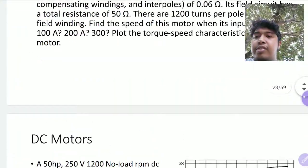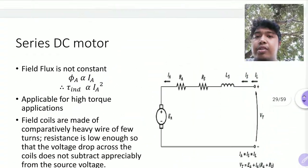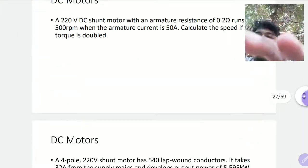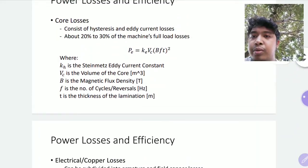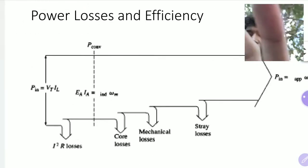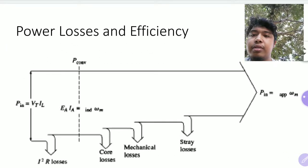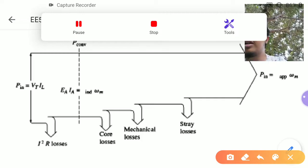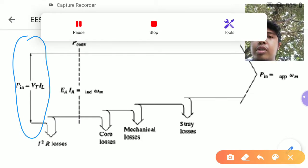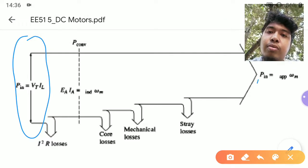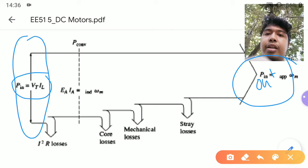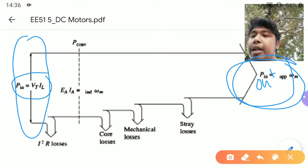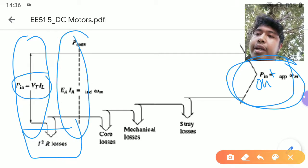Now for the series motor configuration, the current goes from the load to the armature. In terms of power flow, you take an electrical input to produce a mechanical output. Your electrical input is in terms of voltage and current; your mechanical output is in terms of torque and omega. From your electrical input, you reduce the electrical losses to get the power at the armature.